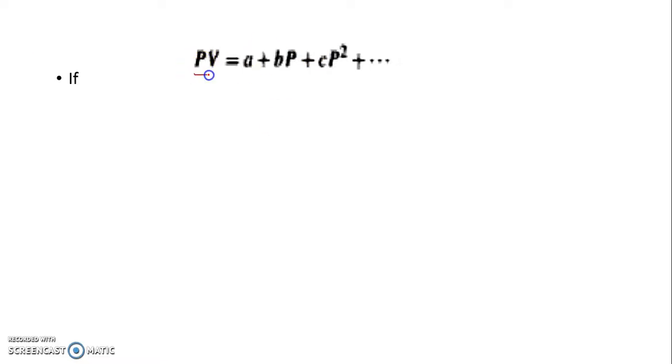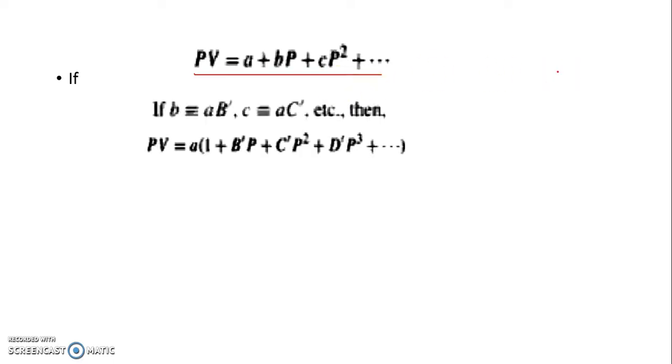The product PV for an isotherm can be expressed as a power series in P. So PV can be represented as A plus BP plus CP² plus DP³. If we do some mathematical manipulation, we write small b as AB', small c as AC'. We incorporate A in every term which contains P.